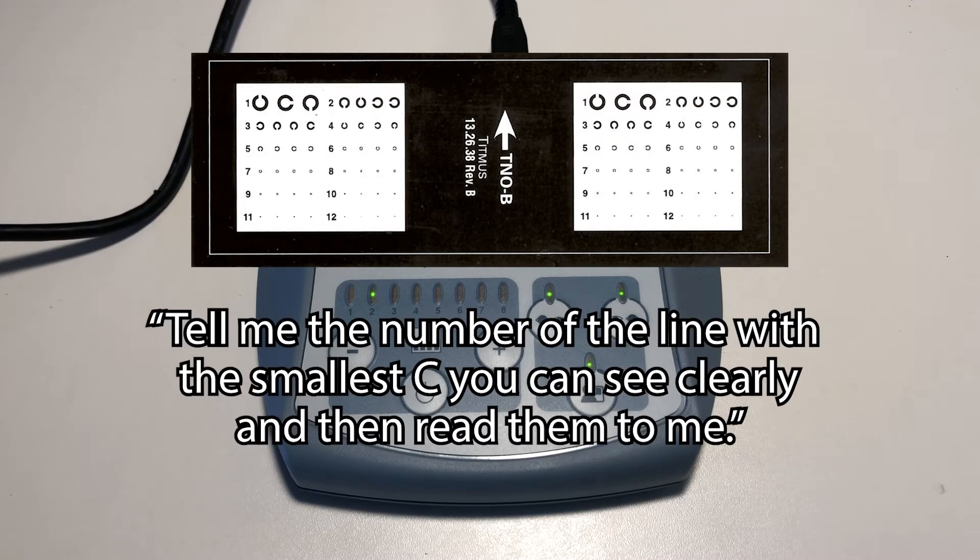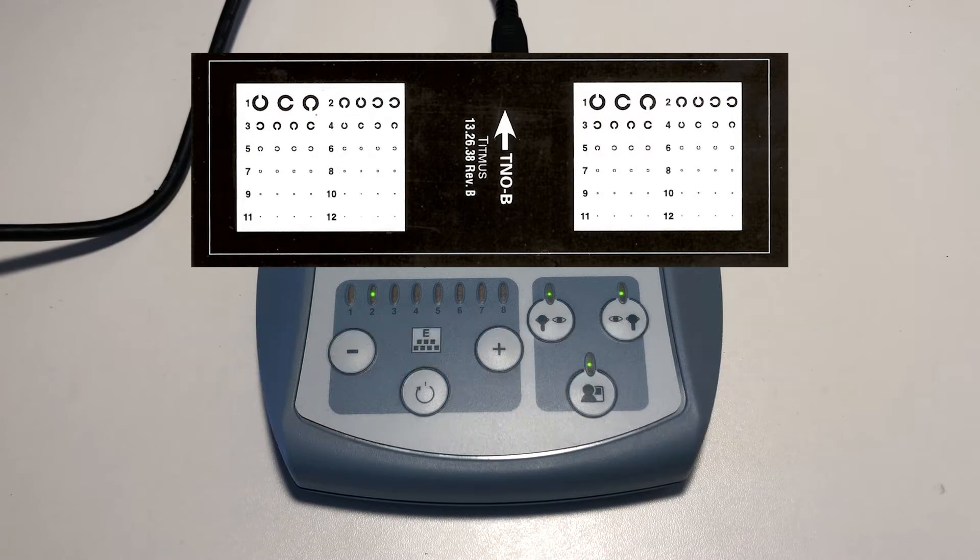When they have done this, say tell me the number of the line with the smallest set of C's you can clearly read and then read them to me. If the patient gets three or more correct, ask them to read the next smallest line.